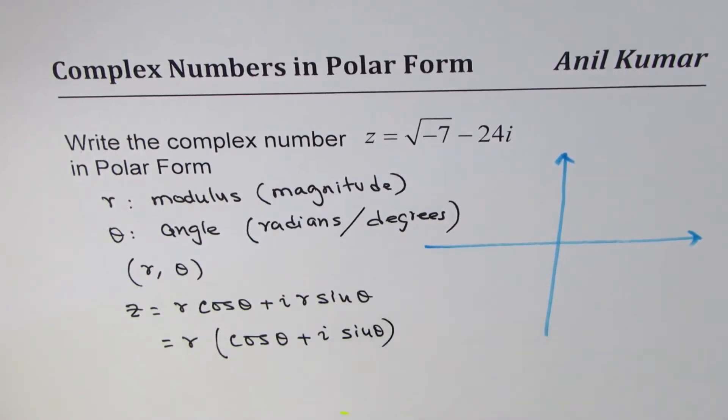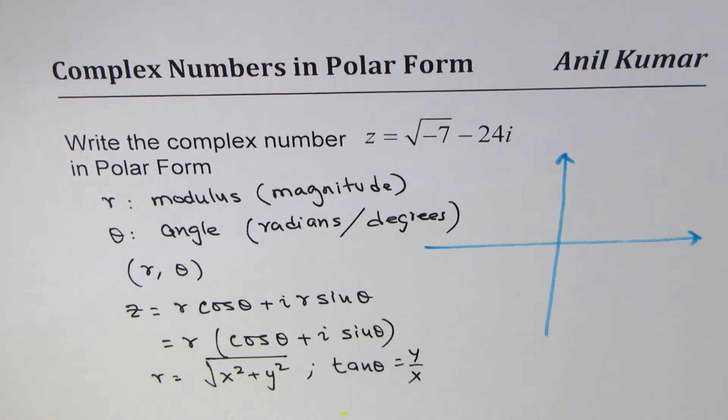The value of r can always be found by square root of x² plus y², and for theta we do tan θ equals y over x, so θ is tan inverse. With that base, I think we can move forward.